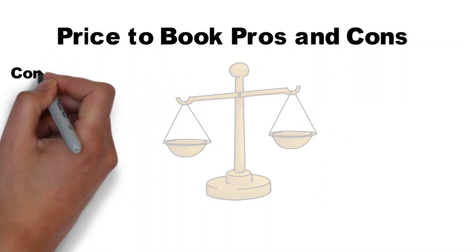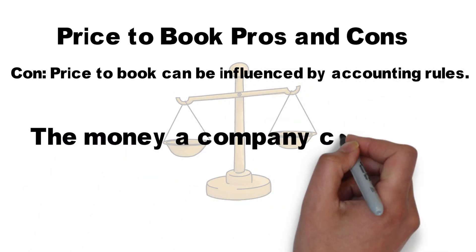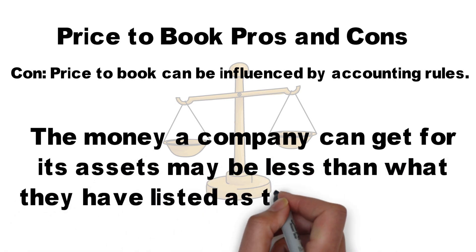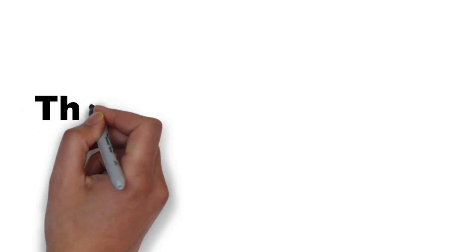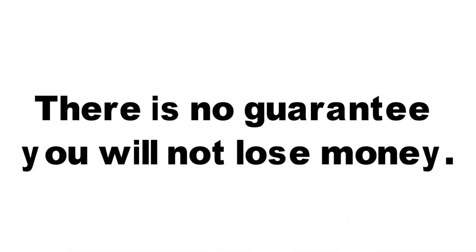A con for using price to book is that it can be influenced by accounting rules. If a company's assets are overstated, this ratio will be distorted, and the assets may not be as valuable as reported. It's also possible that if the company dissolved, assets would sell for less than their stated value. Further, if the company does poorly but does not fail, the price to book ratio could drop well below 1 and stay there for many years. Thus, there is no guarantee you will not lose money on a company with a price to book ratio of 1.